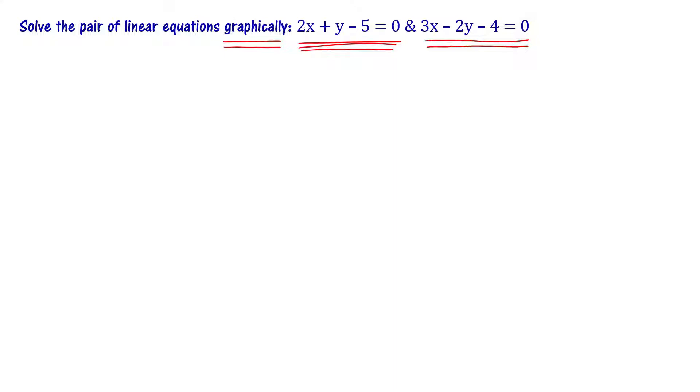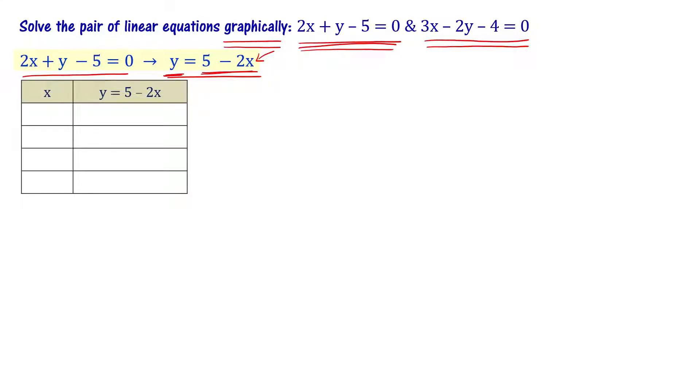Let's start with first equation: 2x + y - 5 = 0. Then we can write y = 5 - 2x. Writing y as a function of x means we can take different values of x and obtain values of y.